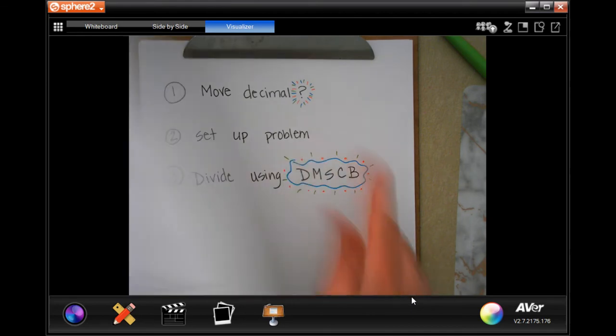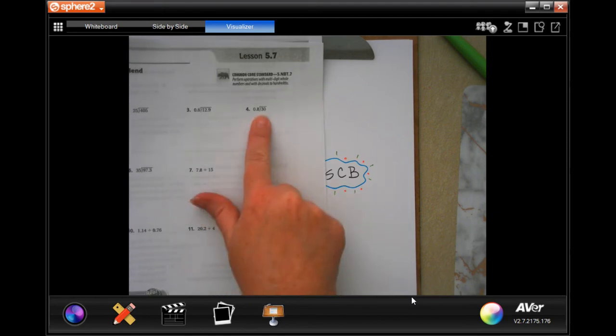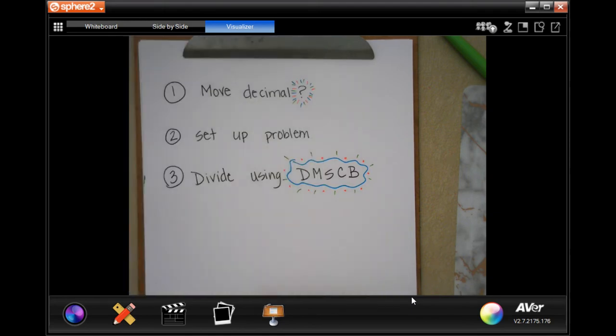Then, set up your problem. If it's written like this, that's really hard to divide. Set it up like this. Then, divide using our dirty monkey smell completely bad or does McDonald's sell cheeseburgers.